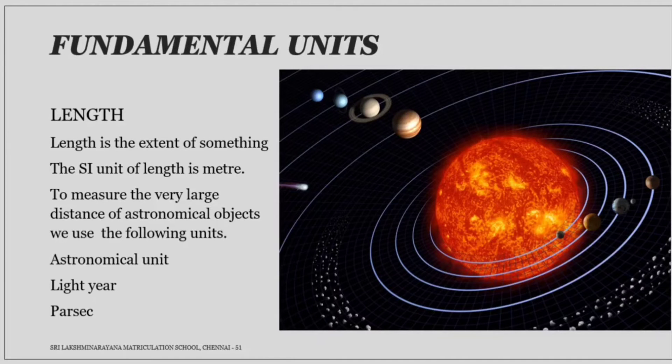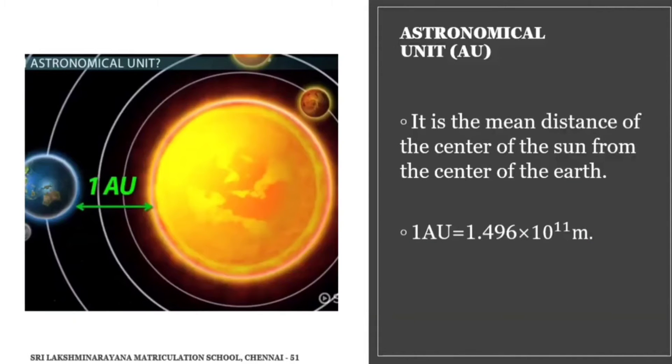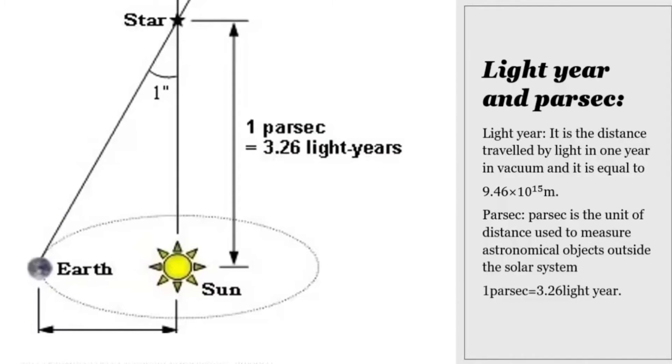They are astronomical unit, light year, and parsec. The mean distance of the center of the sun from the center of the earth is known as astronomical unit. 1 AU is equal to 1.496 × 10^11 meter. Light year is the distance traveled by the light in one year in vacuum and it's equal to 9.46 × 10^15 meter.